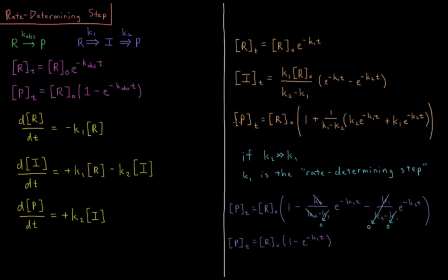And for our product, we have the product concentration equals r0 times 1 plus 1 over k1 minus k2 times k2 e to the minus k1t plus k1 e to the minus k2t.